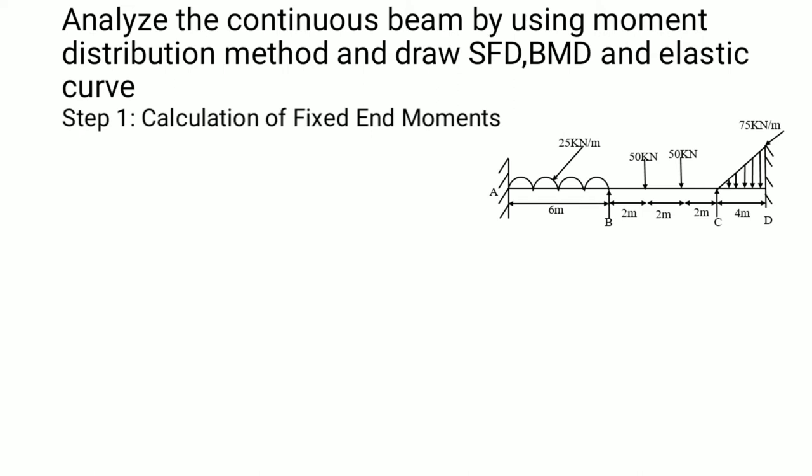The first step is calculation of fixed end moments. For span AB, the fixed end moment MF_AB is calculated using the formula for a uniformly distributed load: −wL²/12. Since we are going from the left-hand side, it is taken as negative. With w = 25 kN/m and L = 6 m: MF_AB = −25 × 6² / 12 = −75 kN·m.